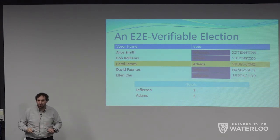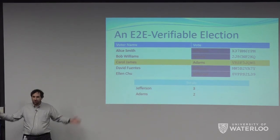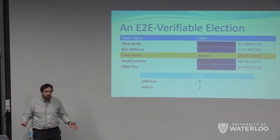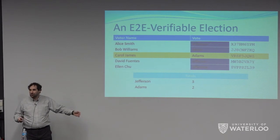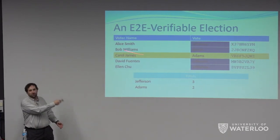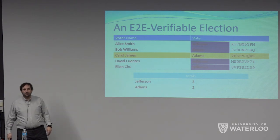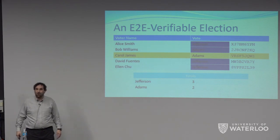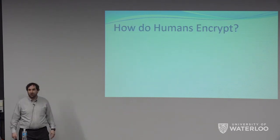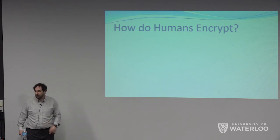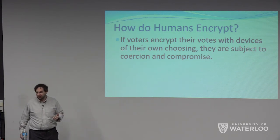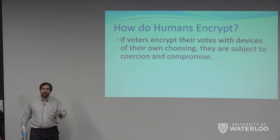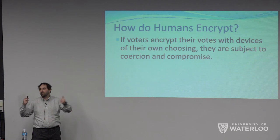When people wanted to actually build these systems, we realized there are a lot of problems with people doing their own encryption. Humans are not very great at encryption — machines can encrypt, people are not so good. So what is going to do the encryption? If voters supply their own devices, they are subject to coercion and the devices could be compromised. If they were on the internet, maybe there's malware. Maybe the devices should be officially supplied — voters go into a voting booth and the machine at the voting station does the encryption on behalf of the voters.